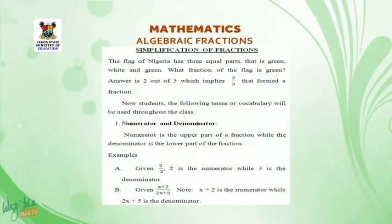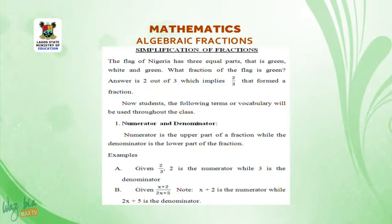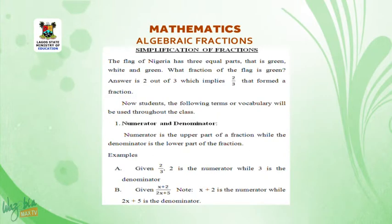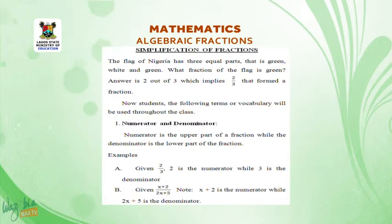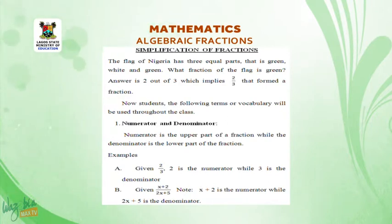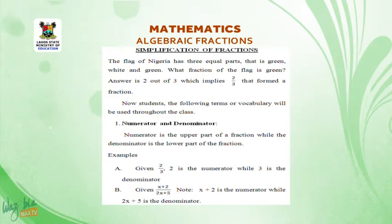Simplification of fractions. The flag of Nigeria has three equal parts — green, white, and green. What fraction of the flag is green? The answer is 2 out of 3, which implies 2 over 3, and that forms a fraction.